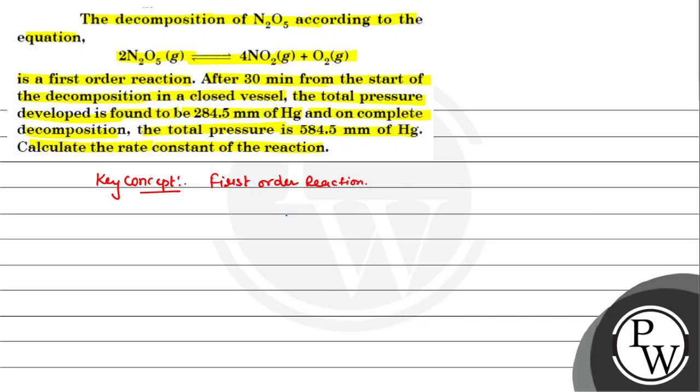So, the initial pressure, the total pressure, the initial pressure, the initial pressure of N2O5. Let's write the initial pressure of N2O5.